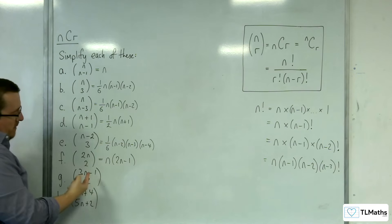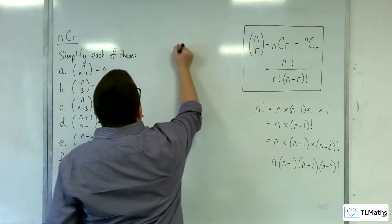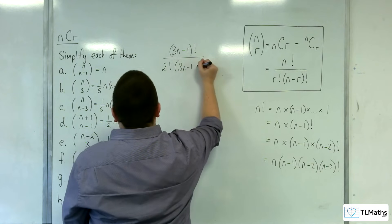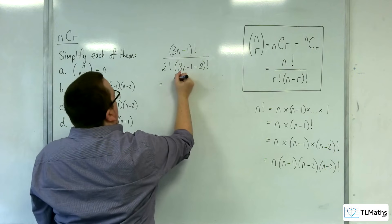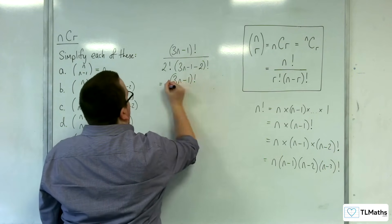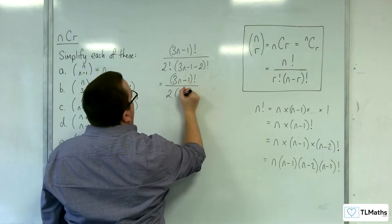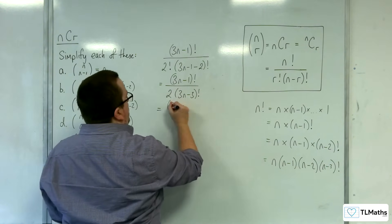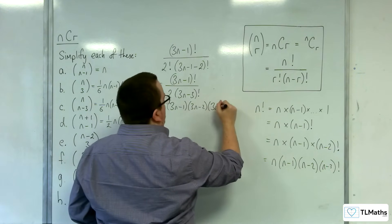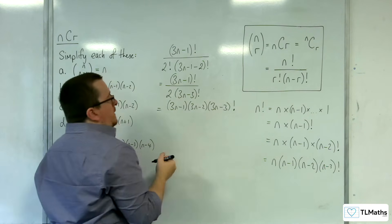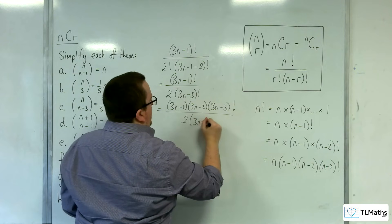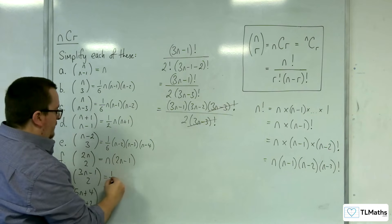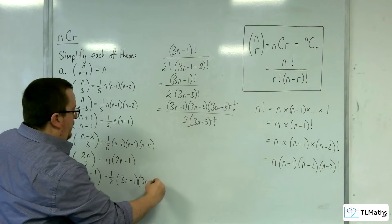Part G: N is replaced with 3N-1, R is replaced with 2. So we get (3N-1) factorial over 2 factorial times (3N-1-2) factorial, which is (3N-3) factorial. Expanding the numerator: (3N-1) times (3N-2) times (3N-3) factorial over 2 times (3N-3) factorial. The (3N-3) factorials cancel, leaving one half of (3N-1)(3N-2).